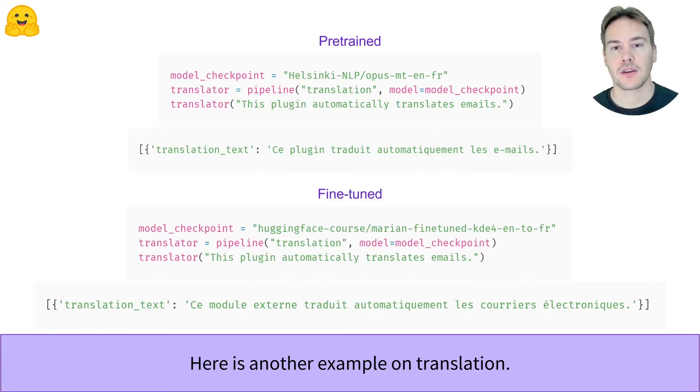The dataset picked for the fine-tuning is a dataset of technical texts, where special attention was picked on translating everything in French. As a result, the fine-tuned model picked that habit and translated both plug-in and email.